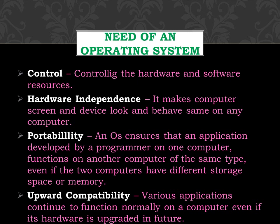Portability: an operating system ensures that an application developed by a programmer on one computer functions on another computer of the same type, even if the two computers have different storage space or memory. Fourth is upward compatibility: various applications continue to function normally on a computer even if its hardware is upgraded in future. All these tasks are done by an operating system, which is why we need one.